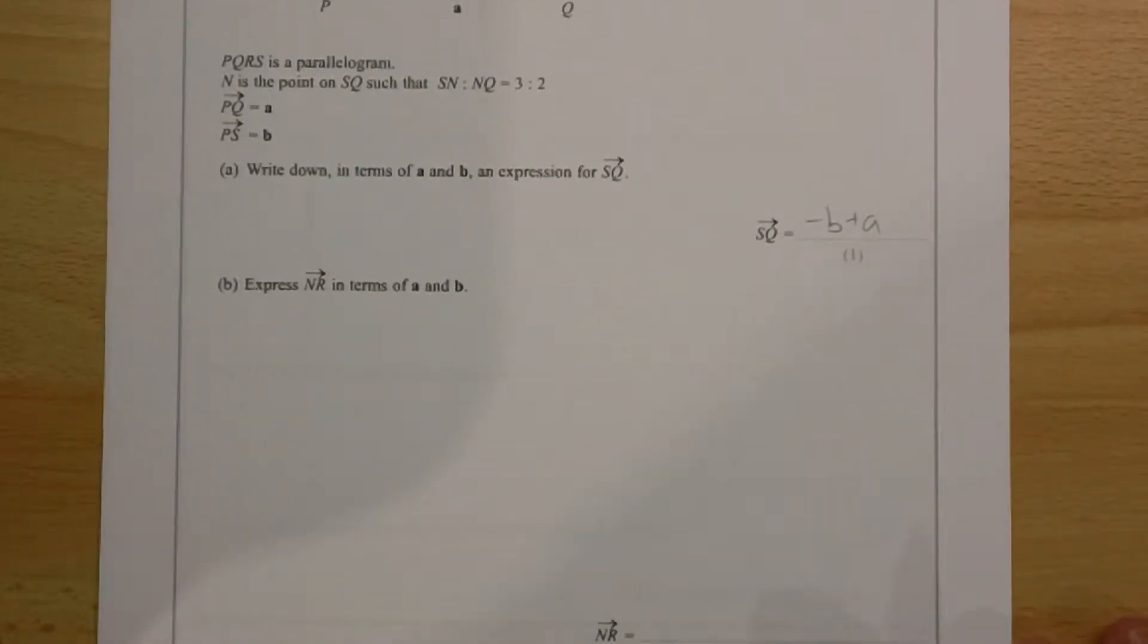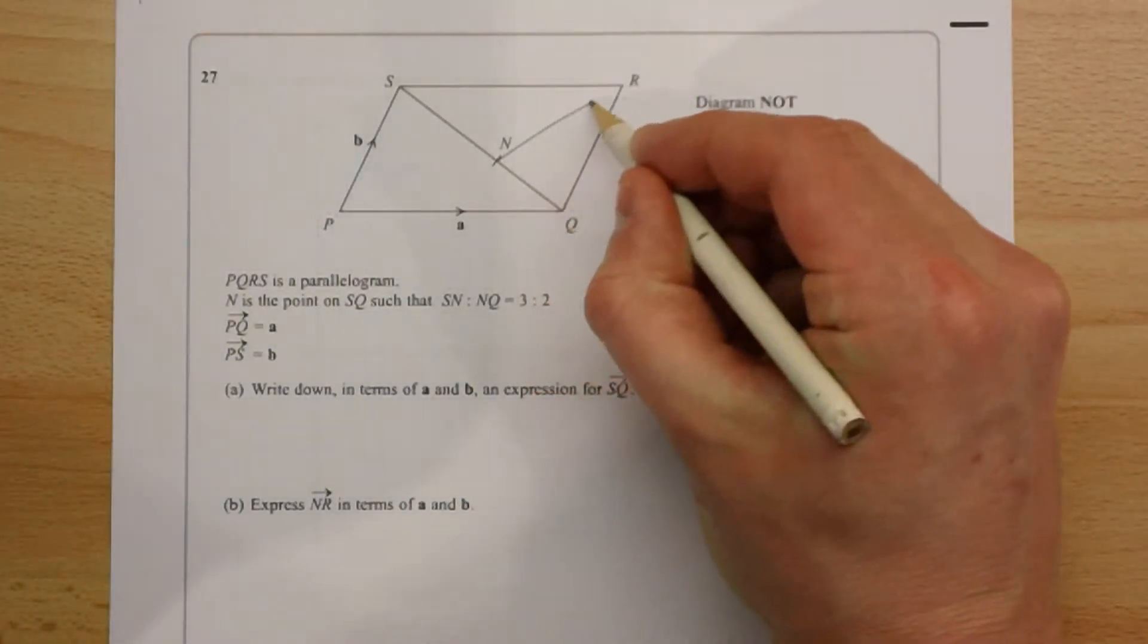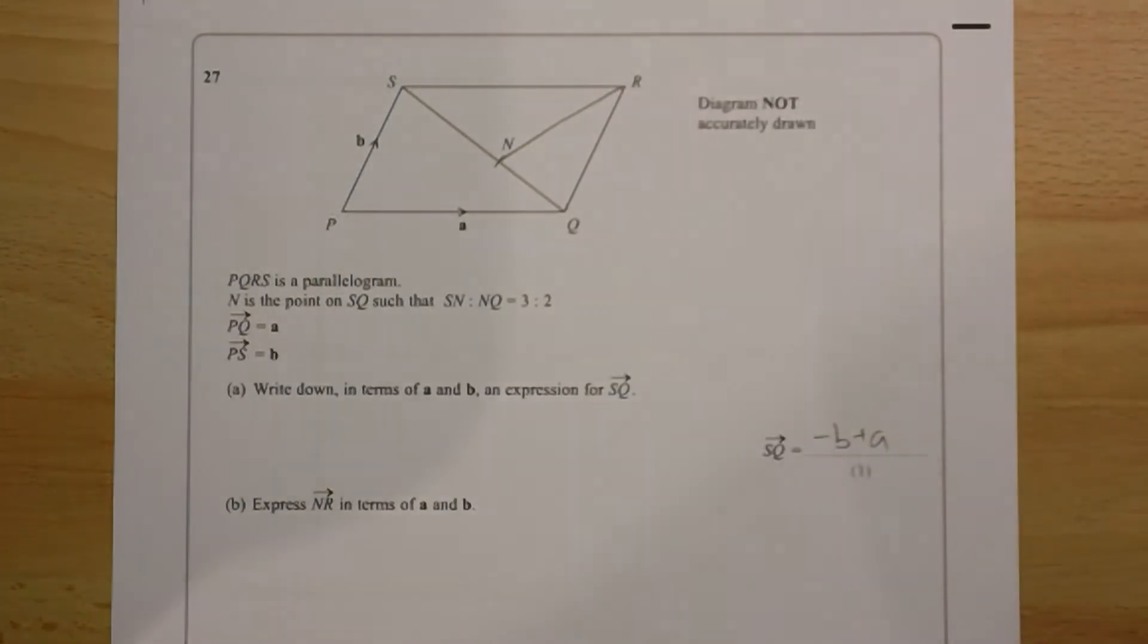Part B, express NR in terms of A and B. So we're looking for this vector here, in terms of the vectors we know, A and B.